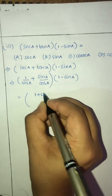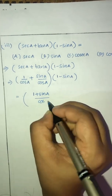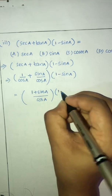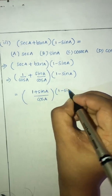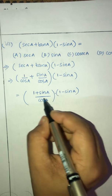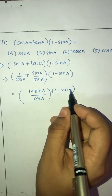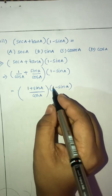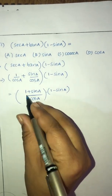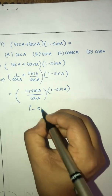The third sub-question is: (1 + sinA) divided by cosA. We multiply numerator by (1 - sinA). This is of the form (a + b)(a - b), which equals a² - b². So the numerator becomes 1² - sin²A, divided by cosA.